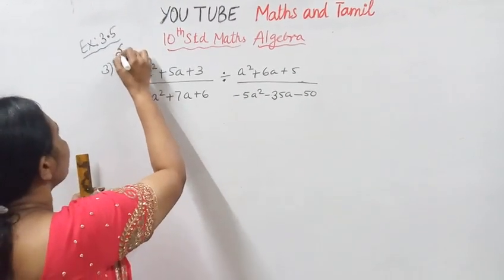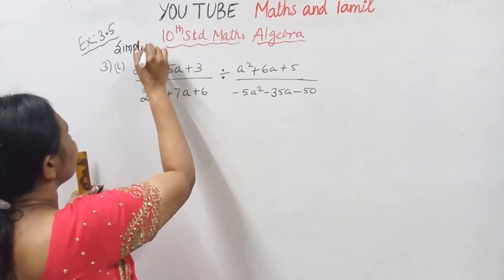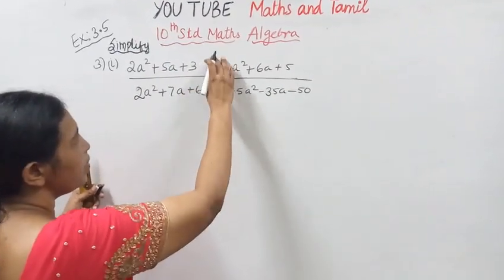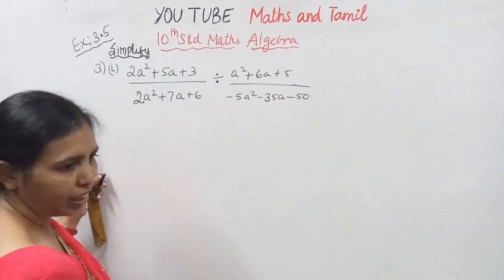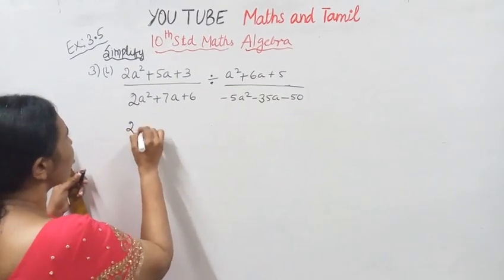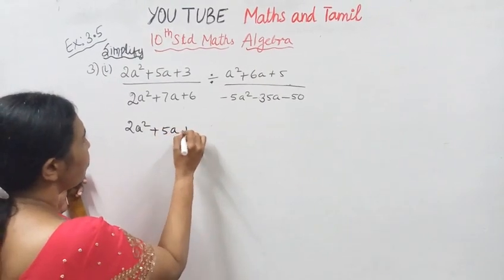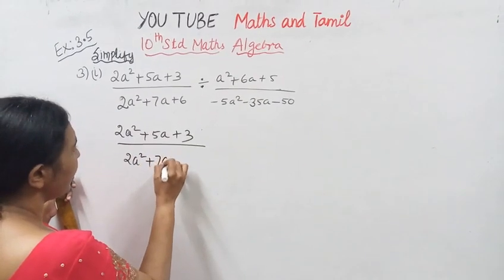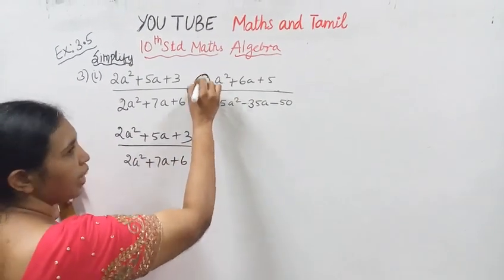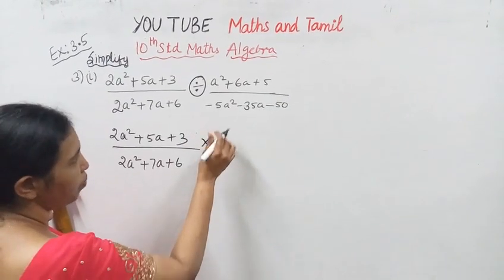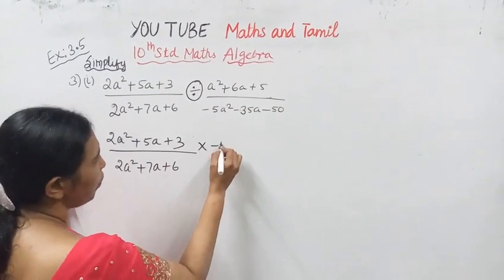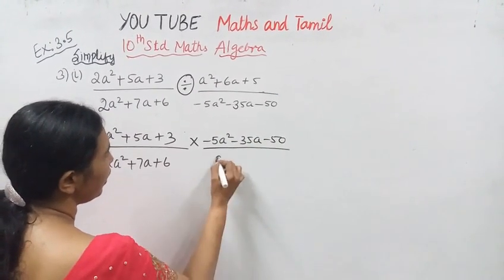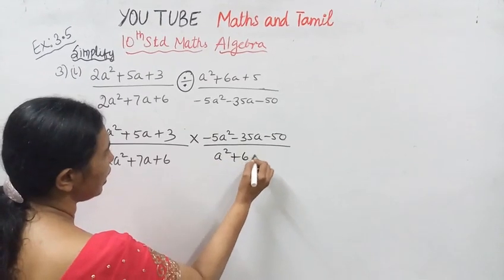The first sum is to simplify. We have a numerator and denominator with division. I am going to get 2a squared plus 5a plus 3 divided by 2a squared plus 7a plus 6. It is division, then multiplication. It is minus 5a squared minus 35a minus 50 divided by a squared plus 6a plus 5.